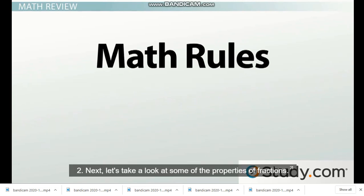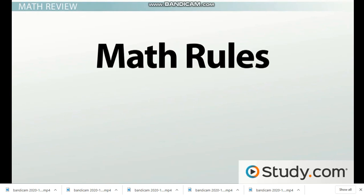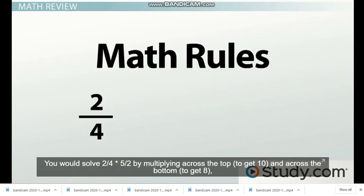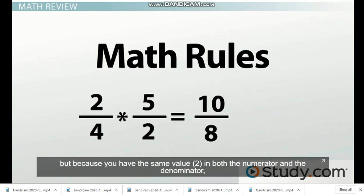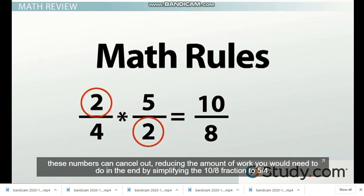You would solve 2/4 times 5/2 by multiplying across the top to get 10 and by multiplying across the bottom to get 8. But because you have the same value, 2, in both the numerator and the denominator, these numbers can cancel out, reducing the amount of work you would need to do in the end by simplifying the 10/8 fraction to 5/4.